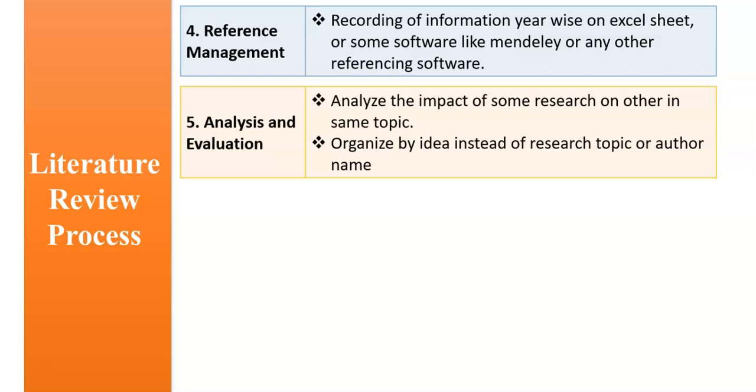Analysis and evaluation. Number one point: analyze the impact of some research on others in the same topic. So we have to look into one research with respect to others. Number two point: organize by idea instead of research topic or author name. So you have to control things with respect to idea rather than just focusing on author or year.